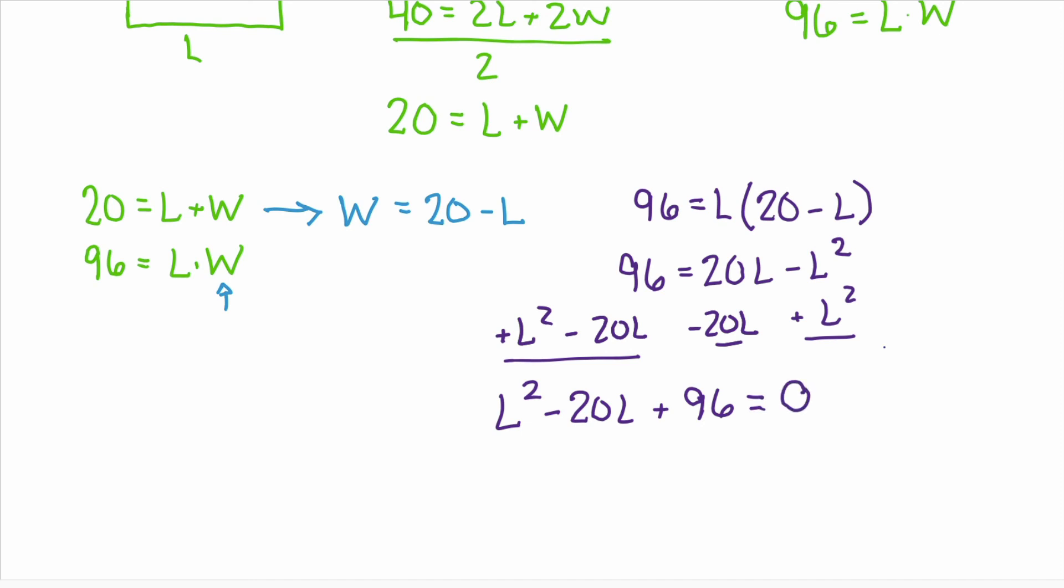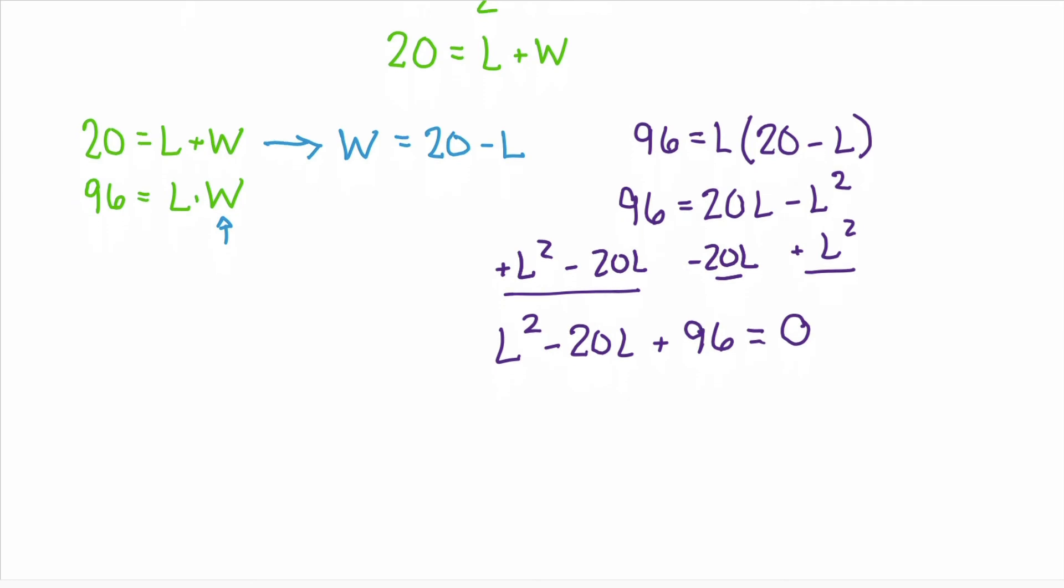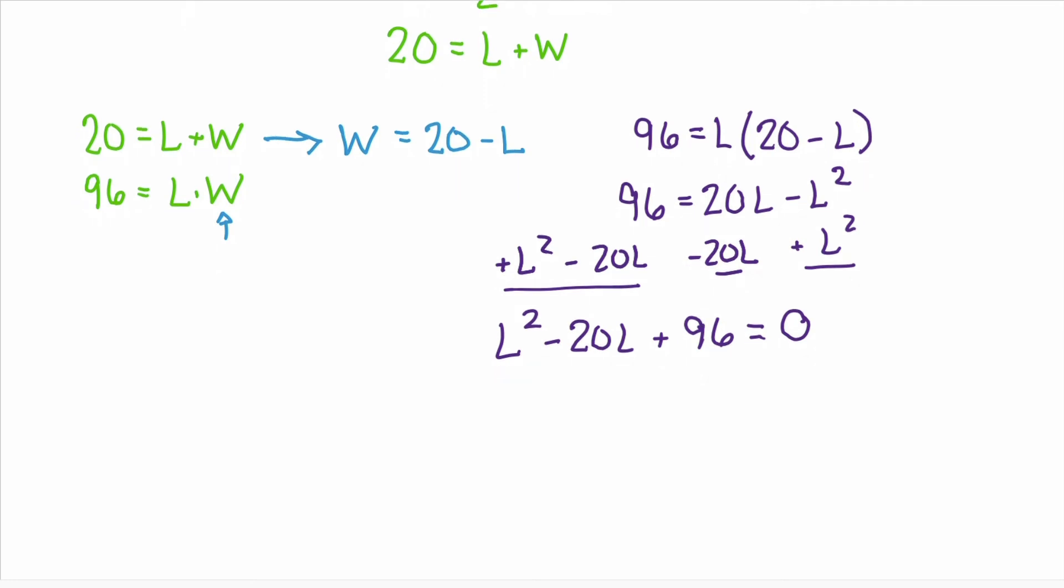So our left hand side will be l squared minus 20l plus 96 equals 0. Notice that we have a polynomial. We have a trinomial. We can factor this. So we'll have l here for our variable. We're looking for the two numbers that are going to multiply to 96 and they're also going to add to a negative 20. A little trial and error and you should quickly find that those two numbers are negative 12 and negative 8.